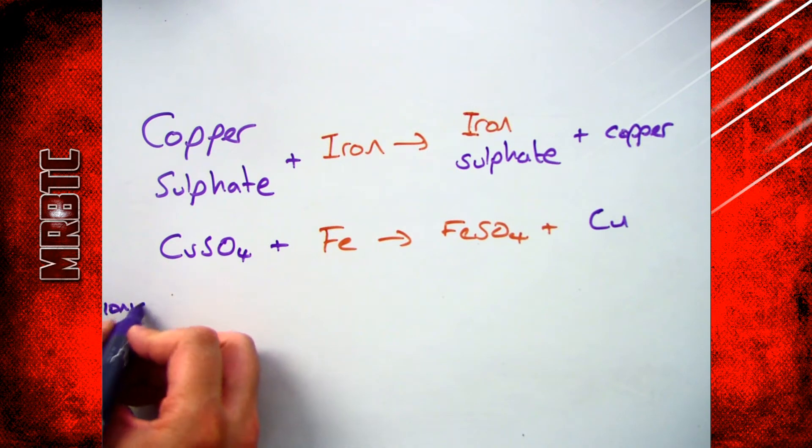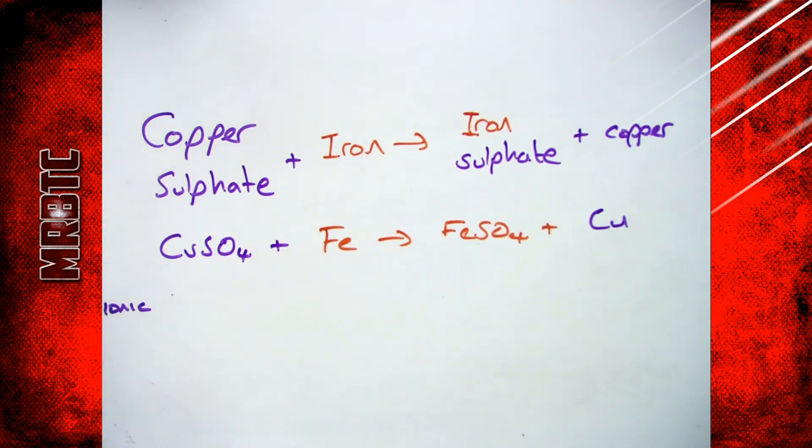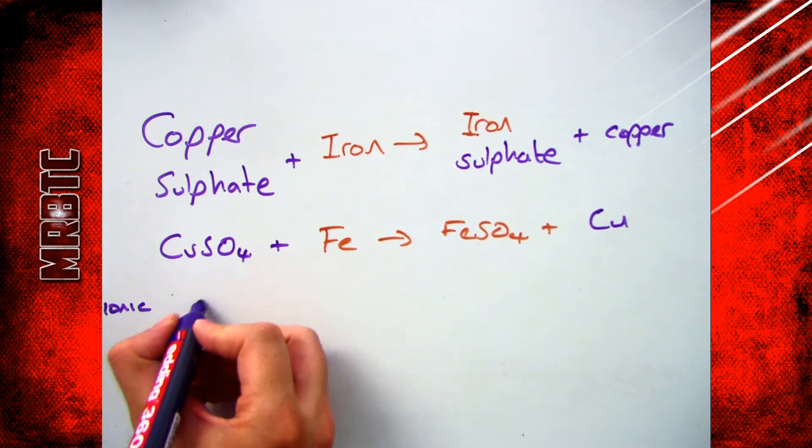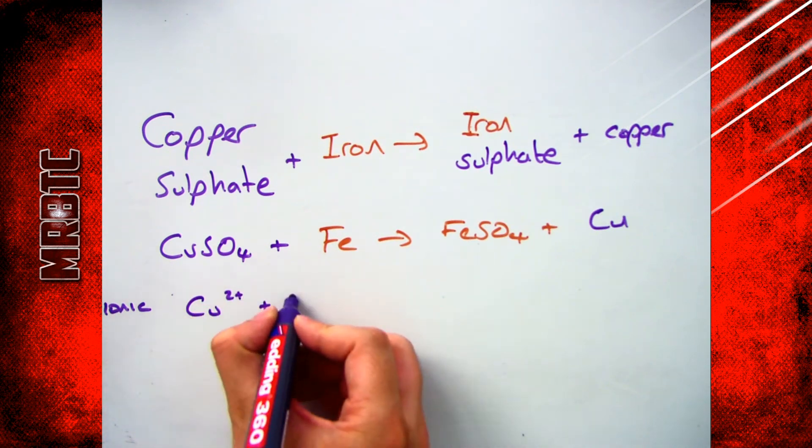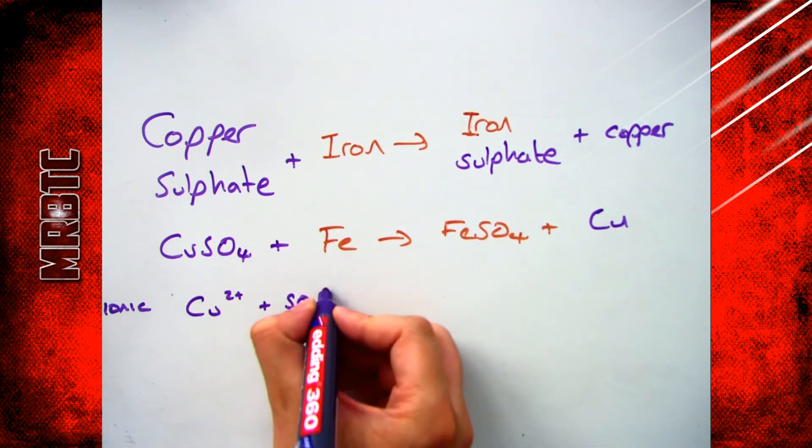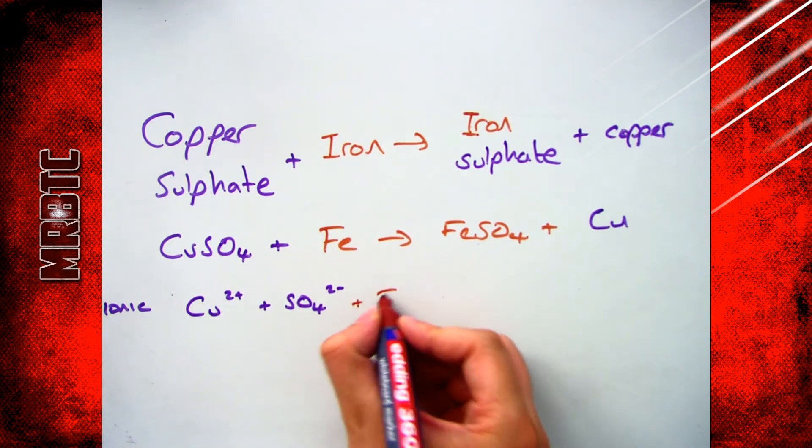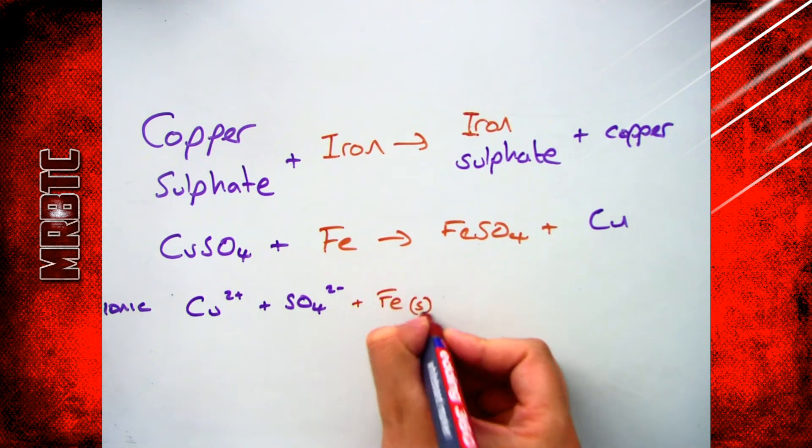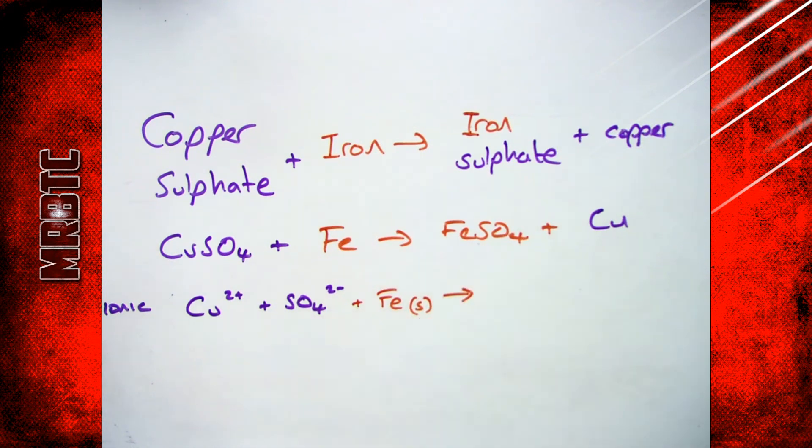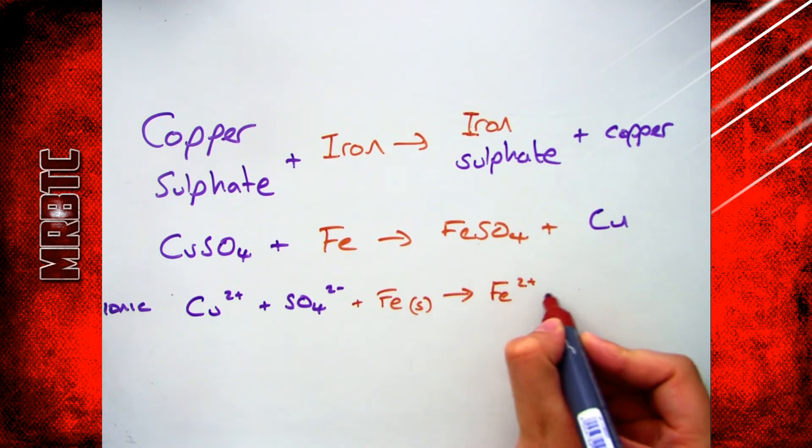So here I've got copper sulfate reacting with iron to make iron sulfate and copper. I've got the symbol equation down below: CuSO4 + Fe → FeSO4 + Cu. So what I need to do is write out the ions, so I know I've got SO4 2- therefore I've got to have Cu2+ because the charges should balance.